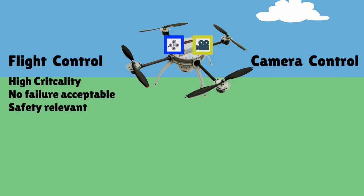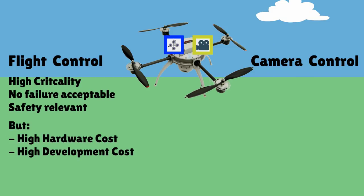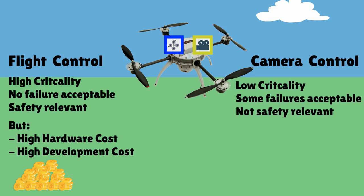Okay, we have the high criticality system. We cannot accept any failures here because it is safety relevant. But ensuring such a high dependability is not for free. It comes with higher hardware costs and higher development costs. The camera control is less critical. Some failures are acceptable because it is not safety relevant. Hence, it requires less expensive hardware and less development effort.